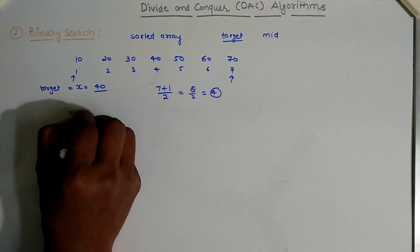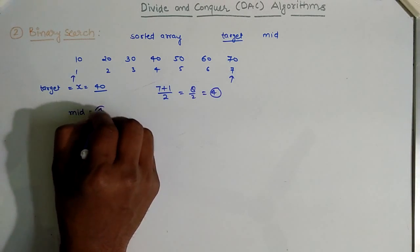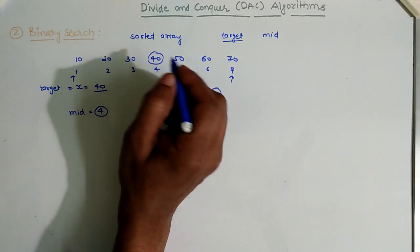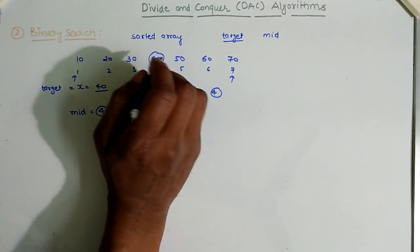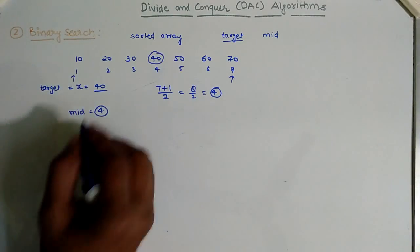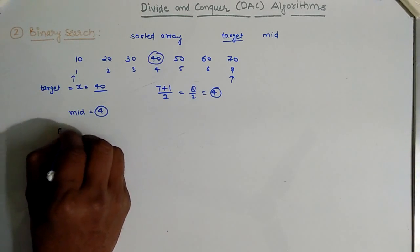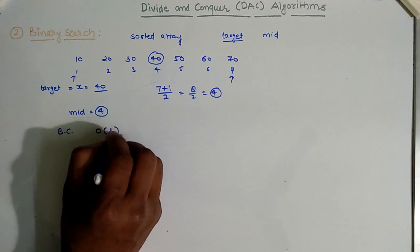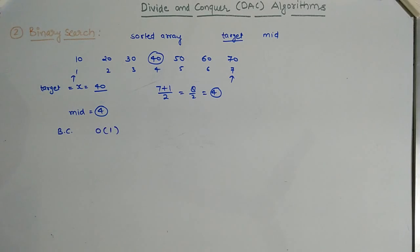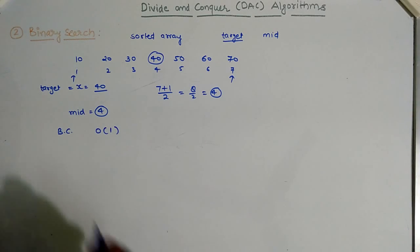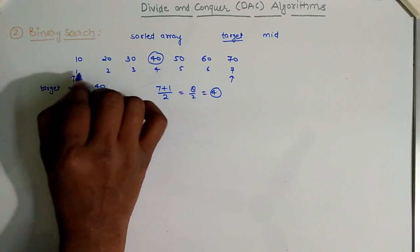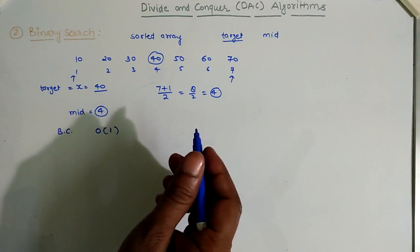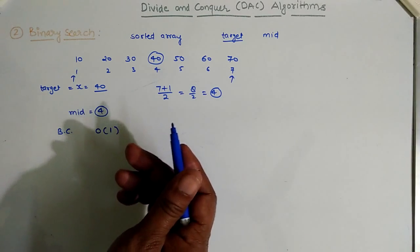So mid equals 4, meaning the mid element is the value at index 4. We check whether it is the target value — yes, it is the target value. This is the best case scenario. In the best case, the time complexity of the algorithm is O(1). Otherwise, we need to divide the problem into two parts, so a problem of size n is divided into a sub-problem of size n/2.